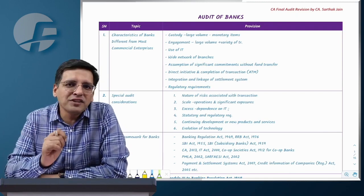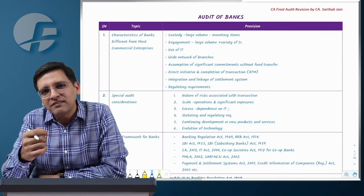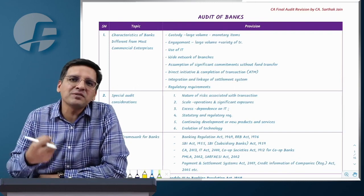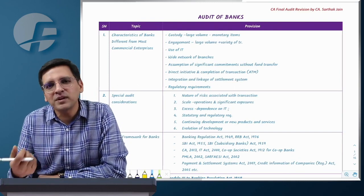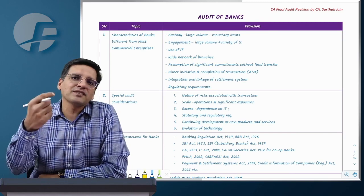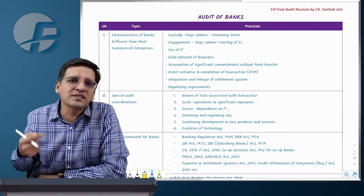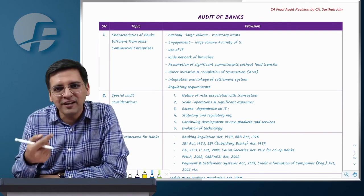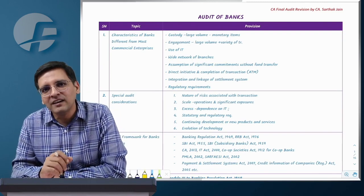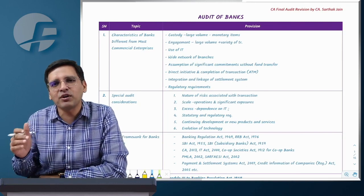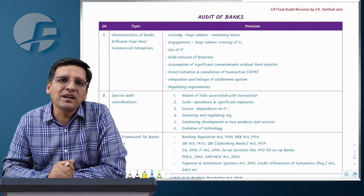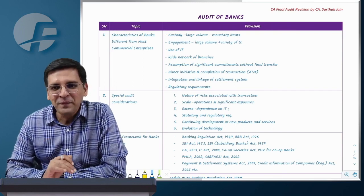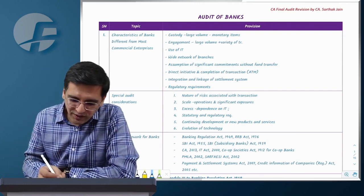I will give you tips and tricks so you don't have to memorize everything. If any questions come in the exam, you can write three to five points, and since there is no fractional marking, one point will have one mark. There are many points from the exam point of view that should be sufficient. Let's get going — Audit of Banks.